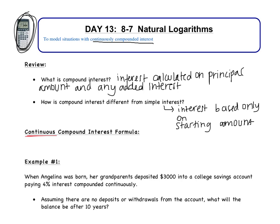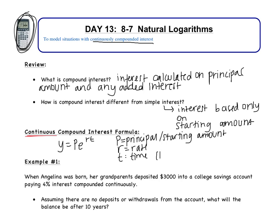The continuous compound interest formula is Y equals P times E to the RT. P is your principal or starting amount, R is your rate, T is the time in years, and E is that irrational constant we learned in the previous video. Y is the final amount in your bank account — the amount after 10 years, 20 years, etc. Everything today is based on this formula.